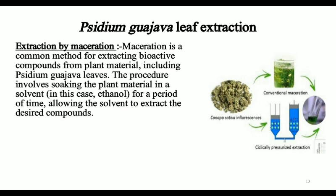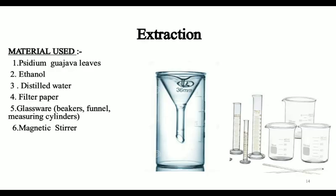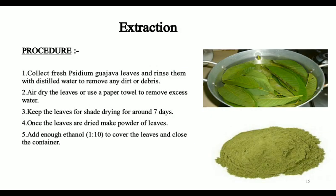We are using the maceration process for extraction of guava leaves' active constituents. Maceration is a common method for extracting bioactive compounds from plant material including Psidium guajava leaves. The procedure involves soaking the plant material in a solvent such as ethanol for a period of time, allowing the solvent to extract the desired compounds, as you can see in this picture. The materials used are Psidium guajava leaves, ethanol, distilled water, filter paper, glassware, and a magnetic stirrer.